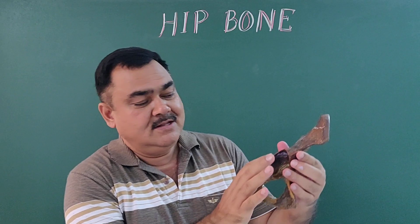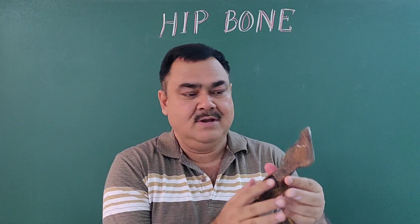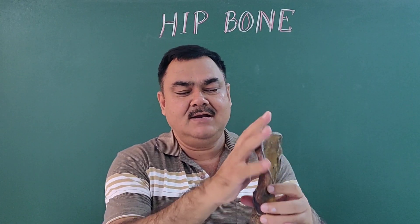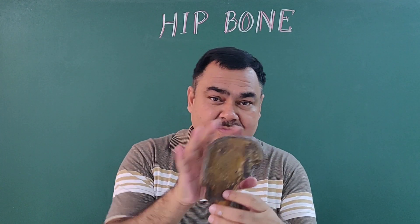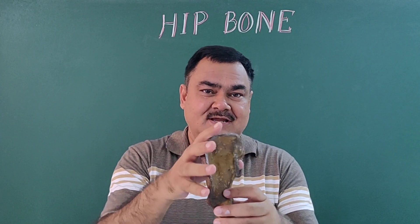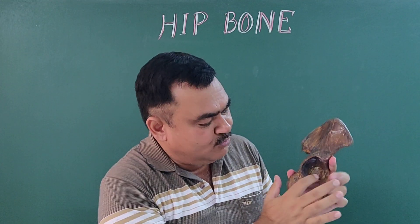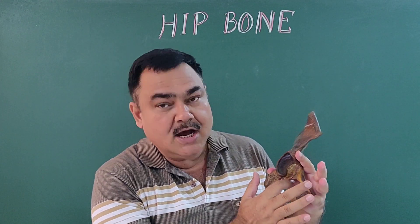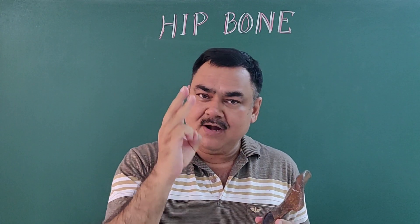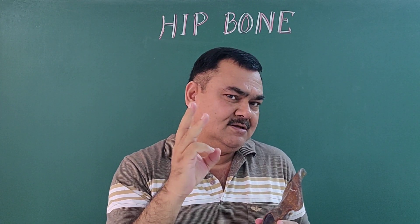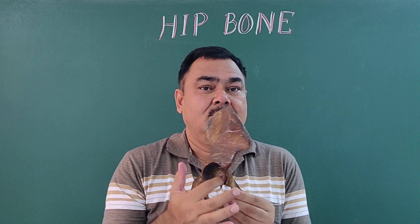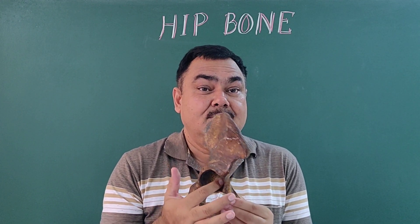This is the acetabulum, and this expanded part above the acetabulum is the ilium. Below the acetabulum is the obturator foramen. To determine the side, remember three things: the acetabulum, the iliac crest, and the obturator foramen.